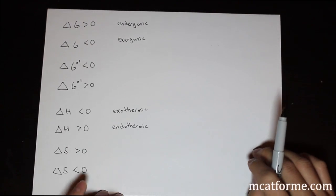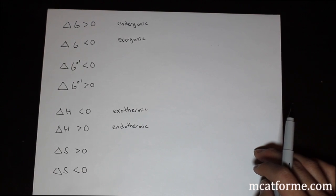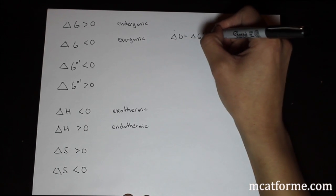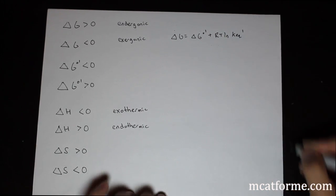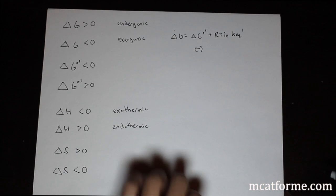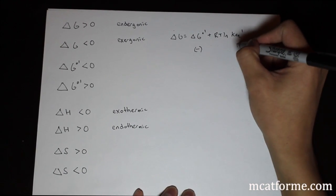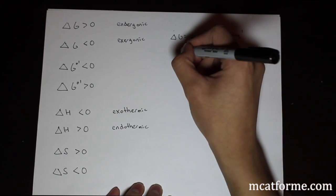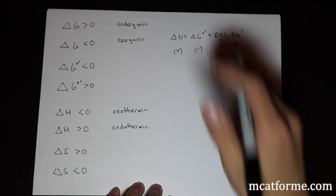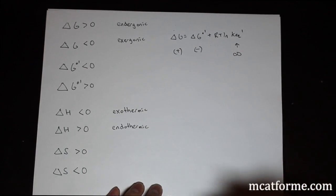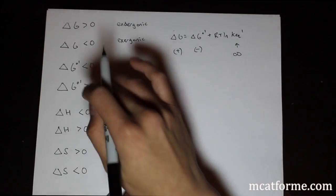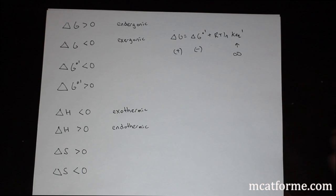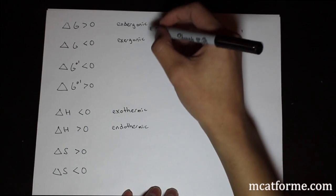One important point: if ΔG°' is less than zero, can we say the reaction is exergonic? The answer is no. Looking at the equation ΔG = ΔG°' + RT ln Q — even if ΔG°' is negative, if Q is extremely large, that term becomes huge and ΔG could become positive. So ΔG°' being negative or positive does not tell us the current direction of the reaction. The MCAT will ask if a reaction is spontaneous — you cannot determine that from ΔG°' alone, only from ΔG.